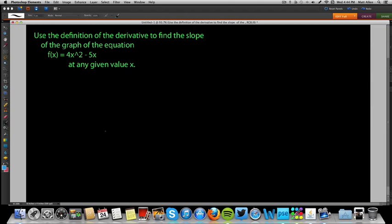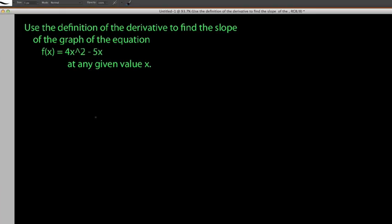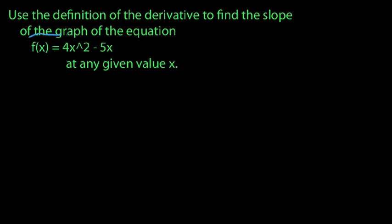In this video we're going to use the definition of the derivative to find the slope of the graph of this given equation here, f(x) equals 4x squared minus 5x. So a little bit prettier to write it this way, 4x squared minus 5x.